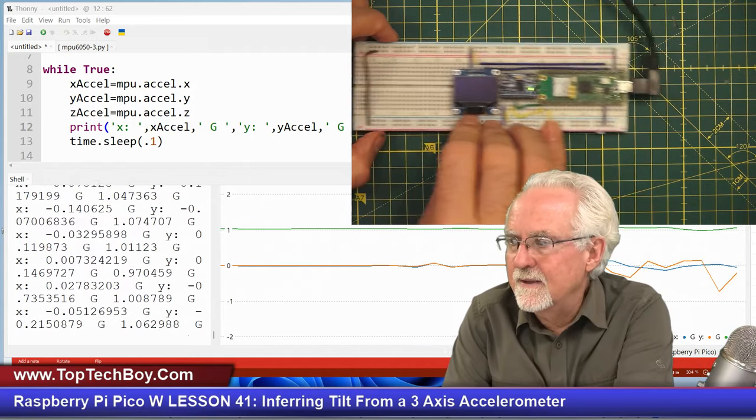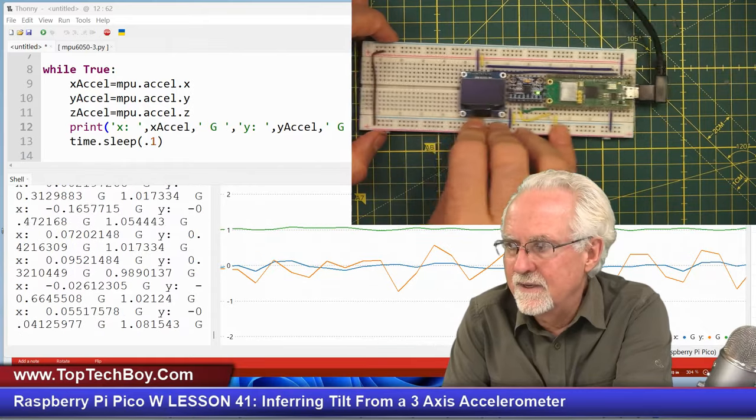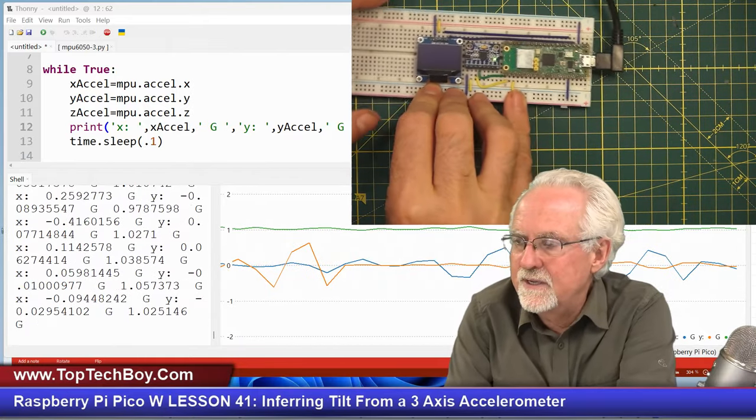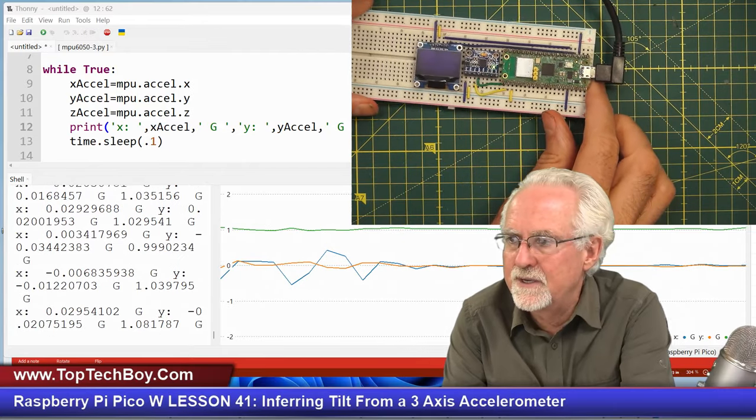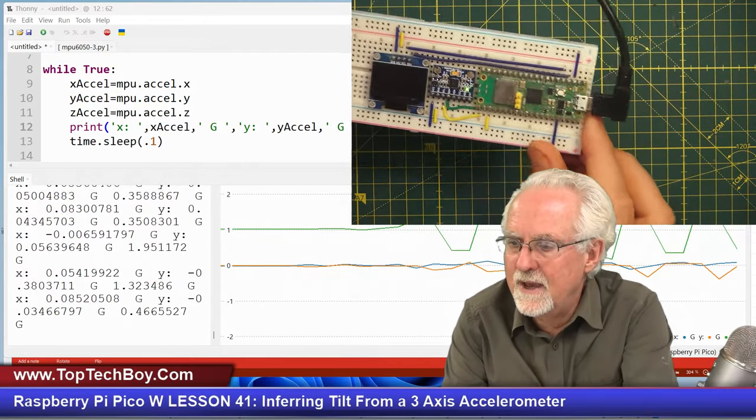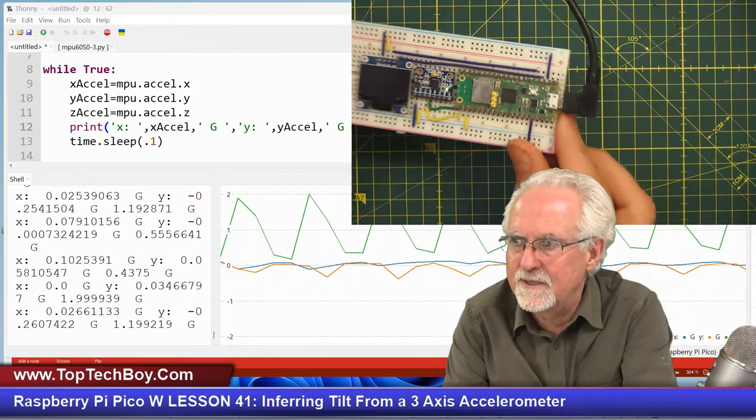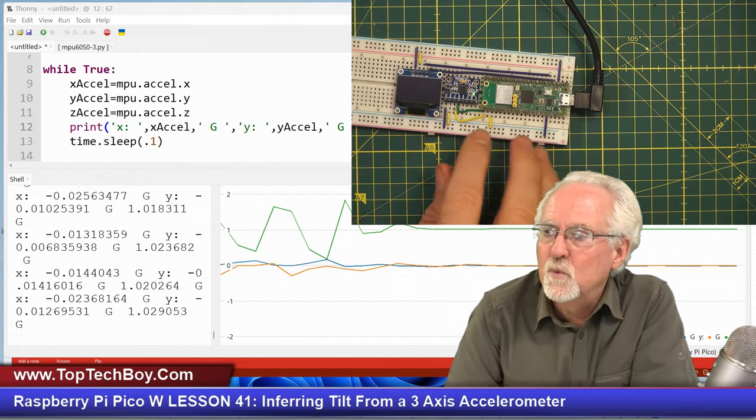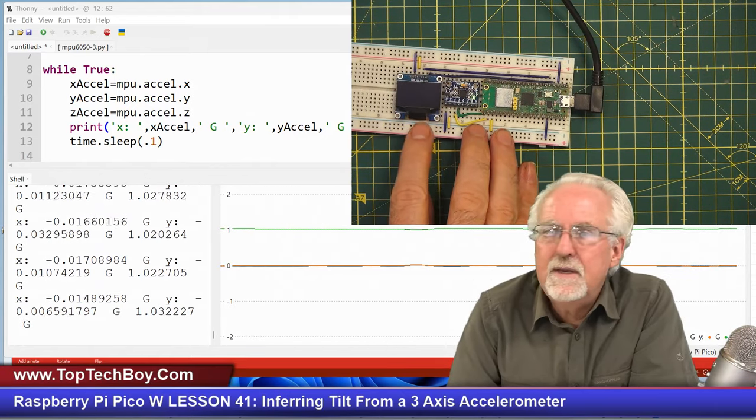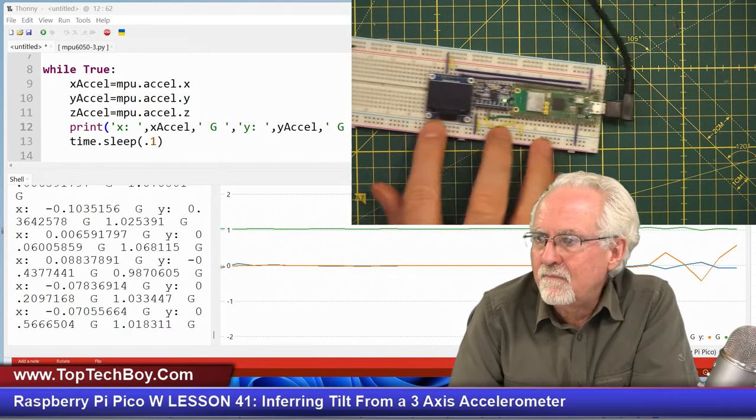I can get acceleration in y, I can get acceleration in x, and now let's try to get acceleration in z. You see I'm getting acceleration in z on top of the one g. I'm getting acceleration there.